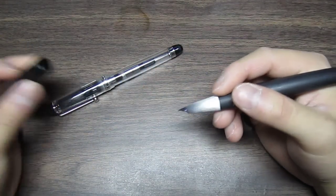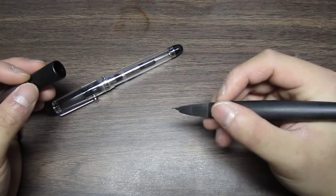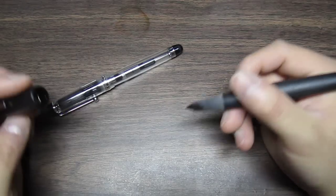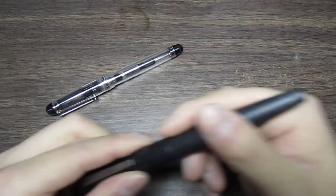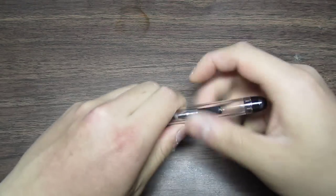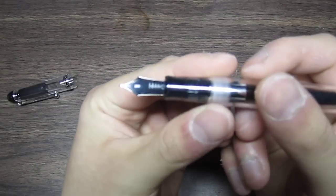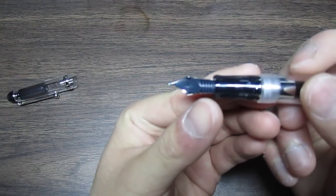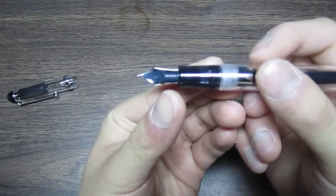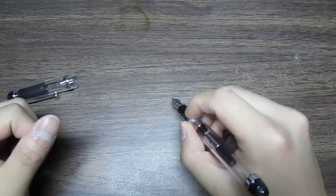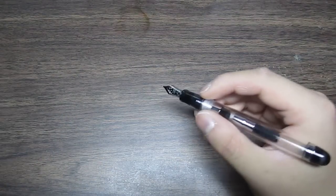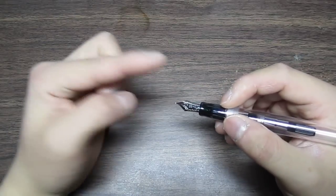Regardless of whether the nib is hooded or not, or what shape it is, it's the same concept. Generally, the section, it's not that easy to see on this pen, but that's called the feet, that plastic piece there. Sometimes it's ebonite. That's the part that you want to keep facing downwards on the paper, with the hood, the nib facing upwards.